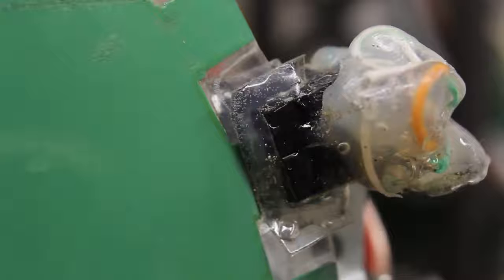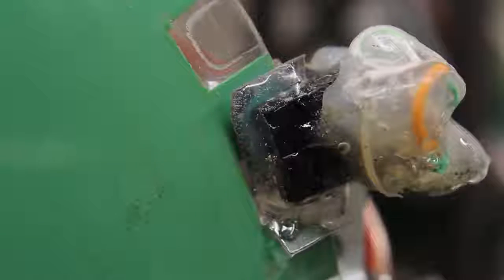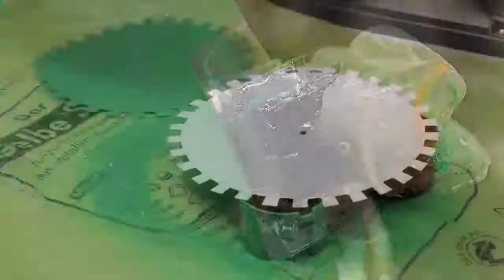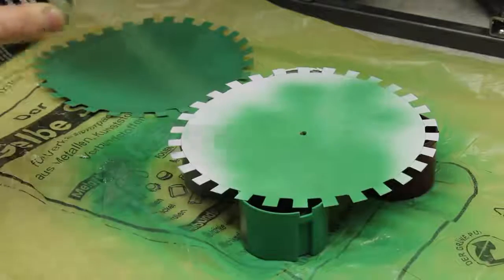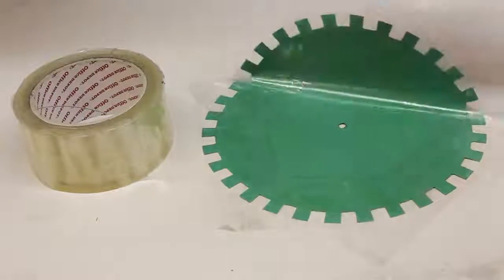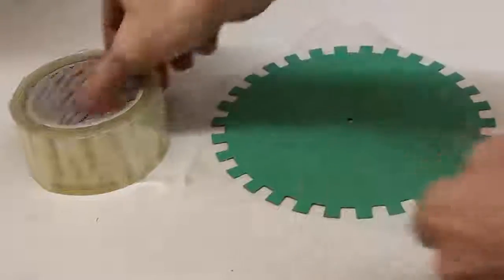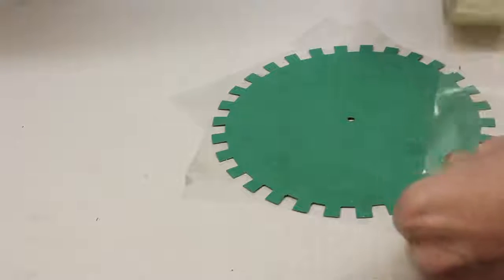The movement of the motors is controlled using rotary encoders as demonstrated in a previous video. The sensor discs are cut from cardboard and covered with paint to make them water resistant. The teeth are covered with adhesive tape from both sides.